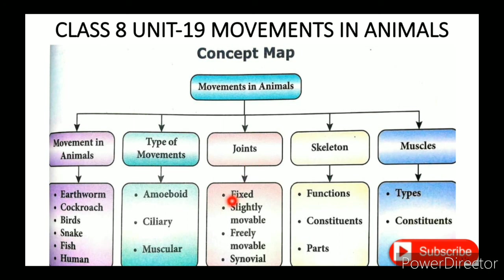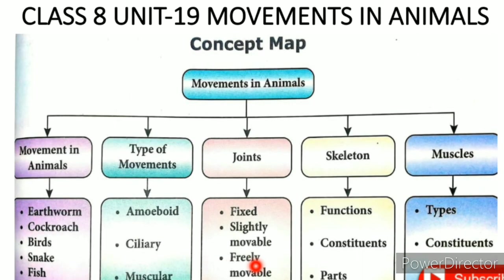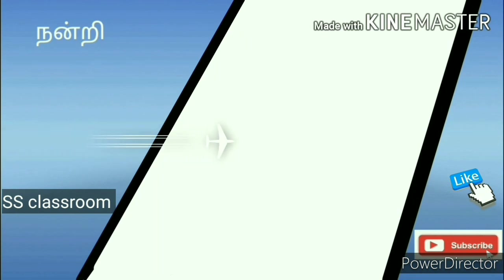In this video, we saw joints between two bones: the skull as an example of immovable joints, the vertebrae as slightly movable, and freely movable joints with six types. In the next video, we will see more. Thank you, student.